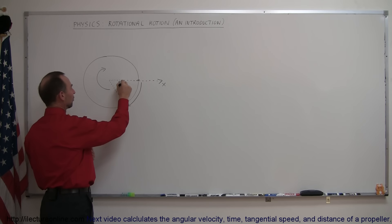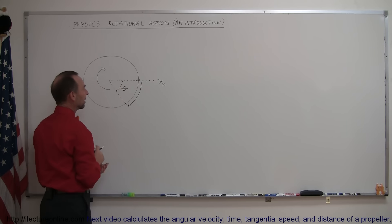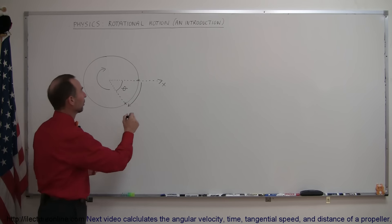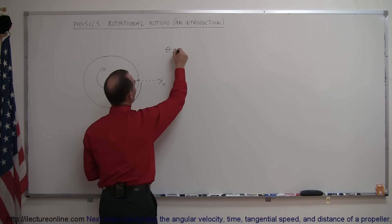And the angular distance can be denoted by the angle, let's say theta. So theta is the distance, or angular distance that it covered. Theta represents angular distance.